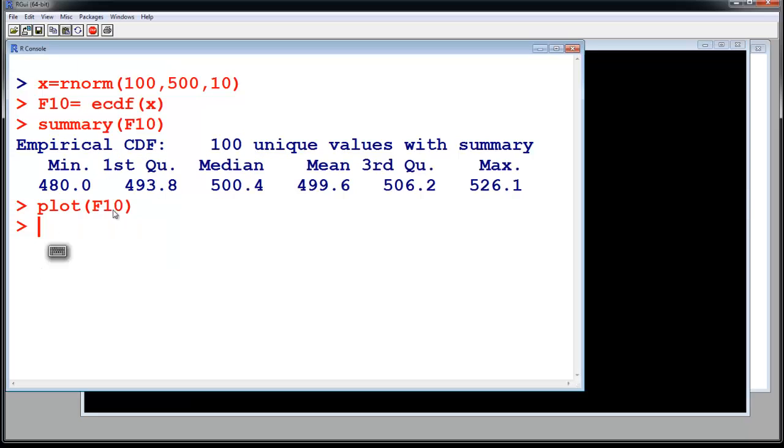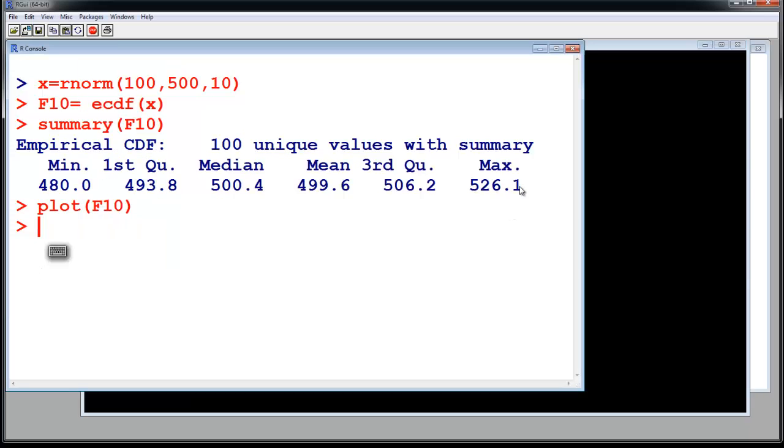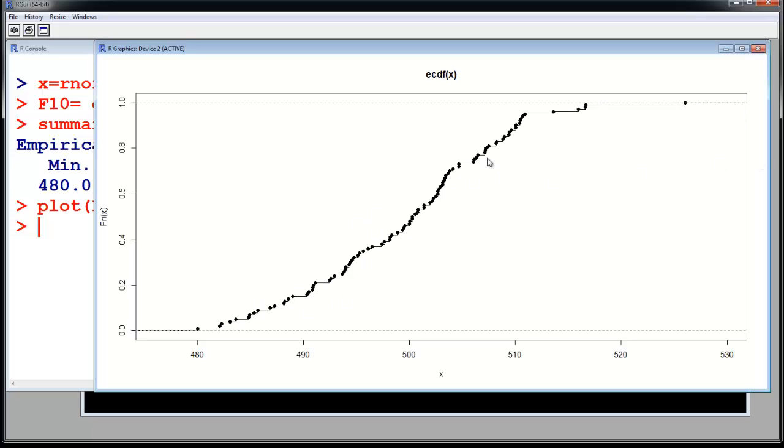And the summary is just normal summary. Let us just run all this and we will see. Select it, hit run button, and the maximum value we got is 526, and the plot of F10 is right here. This is the plot you got.